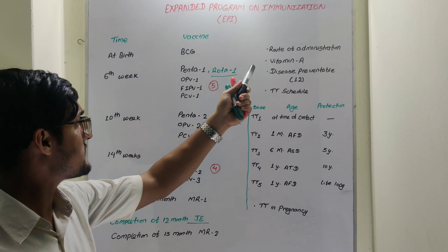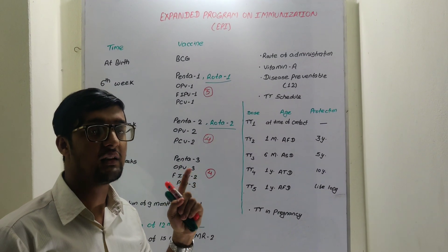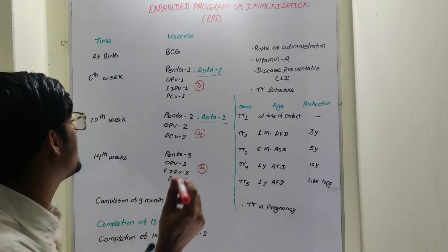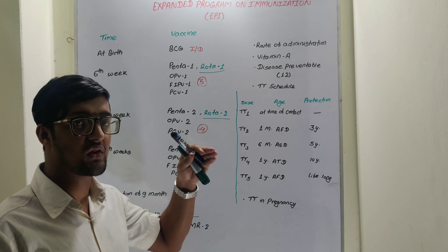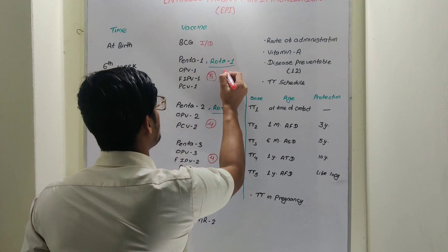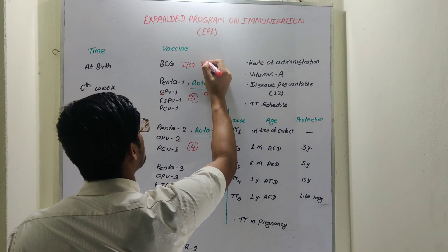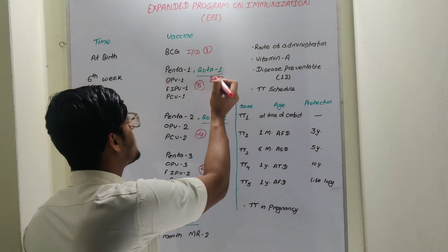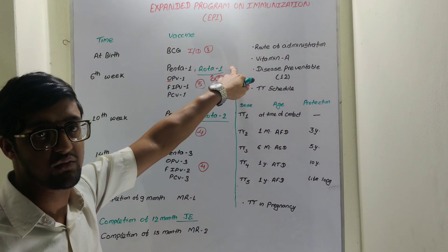Now let's discuss the route of administration — this is a very important question. The one and only vaccine in the EPI schedule given by intradermal route is BCG vaccine. For oral route: Oral Polio Vaccine is given orally. The next vaccine given orally is Rota vaccine — it prevents diarrhea, and since the mode of transmission of diarrhea is feco-oral, the vaccine is also given by oral route.